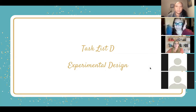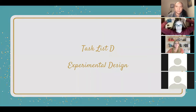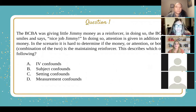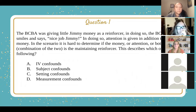All right, you guys, let's dive into question one. The BCBA was giving little Jimmy money as a reinforcer. In doing so, the BCBA also smiles and says, 'Nice job, Jimmy.' Attention is given in addition to the money. In this scenario, it is hard to determine if the money or attention, or a combination of both, is the maintaining reinforcer. This describes which of the following?